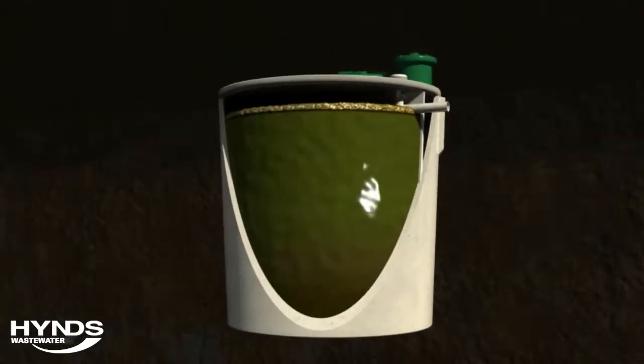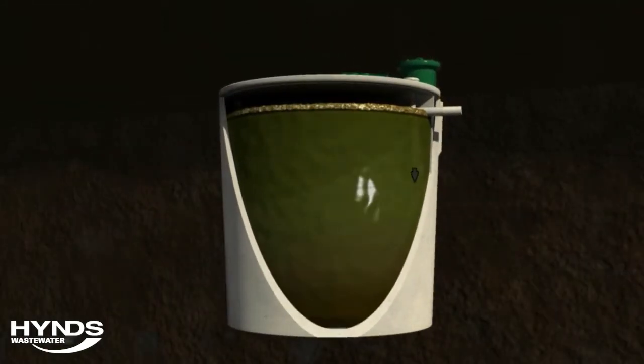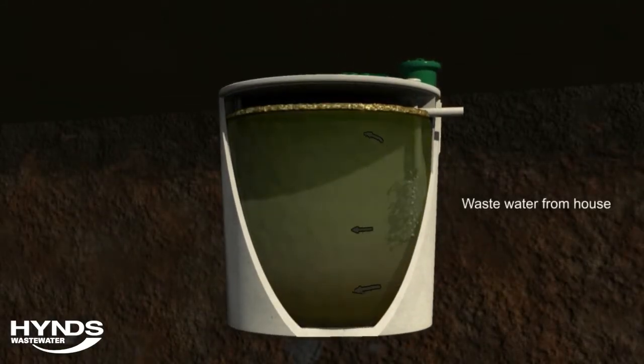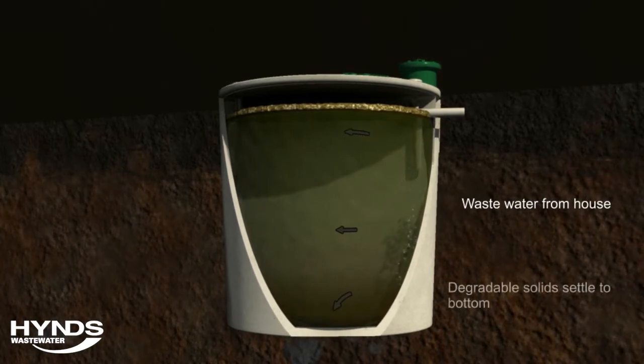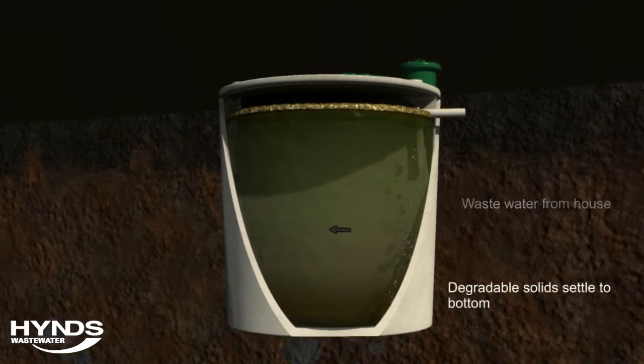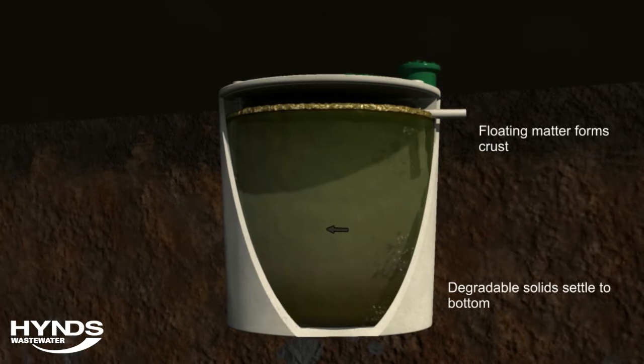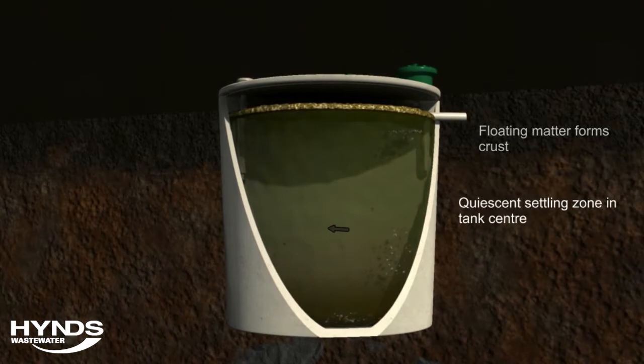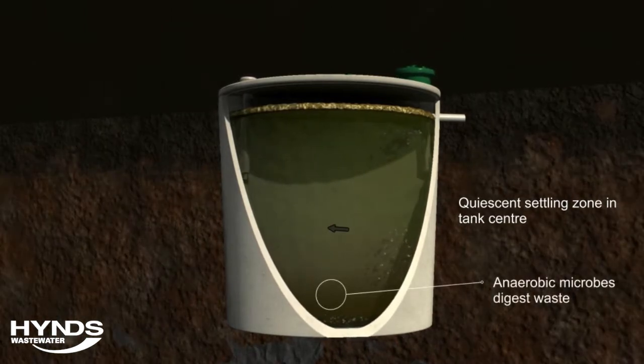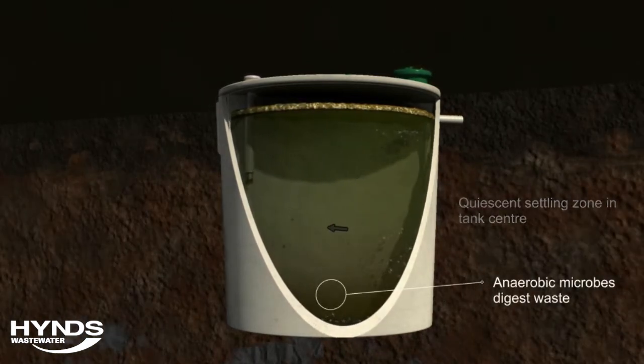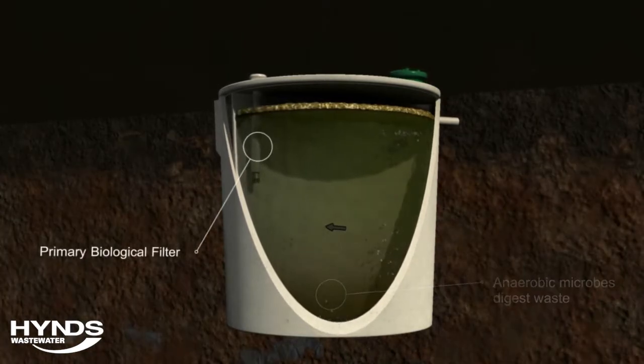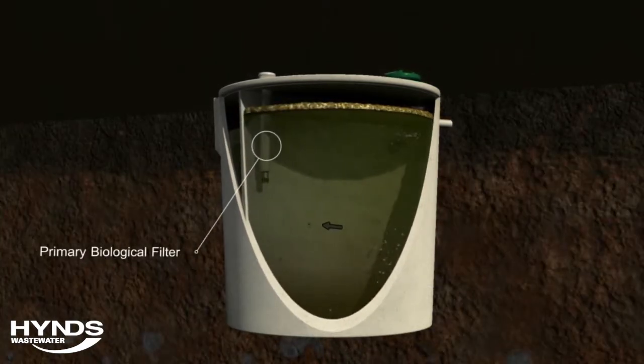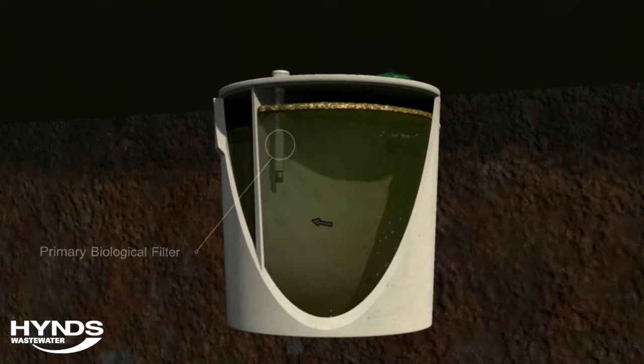The household wastewater enters the treatment system into a primary treatment chamber. As the wastewater passes through the primary chamber, solid matter sinks into the bottom of the tank and begins to decompose. Floatable material rises to the top of the chamber and forms a solid crust that floats on top of the wastewater. This crust is vital in containing any gases formed in the anaerobic process taking place in the tank. The wastewater passes through a biological filter on the outlet of the primary chamber.